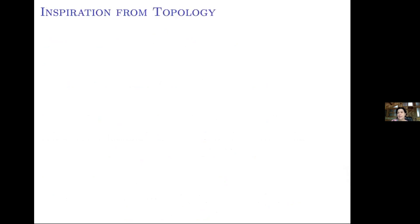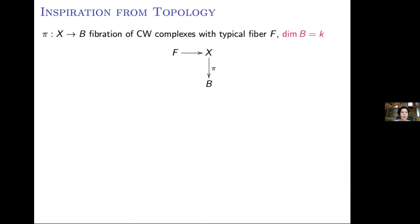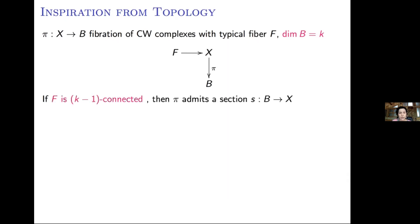Before I describe the geometry of higher Fano manifolds, let us take a break from algebraic geometry and get some inspiration from topology. Suppose we have a fibration pi from X to B, a fibration of CW complexes with typical fiber F, and let the dimension of the base B be k. In topology, we want to find conditions on the topology of the typical fiber F for the existence of a section. The answer is well known: if the fiber F is (k−1)-connected, then the fibration pi admits a section.